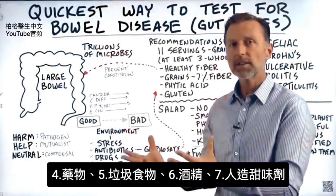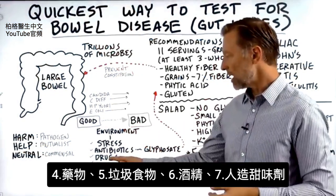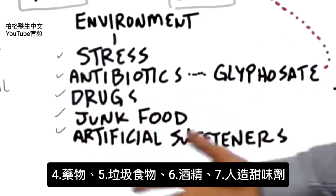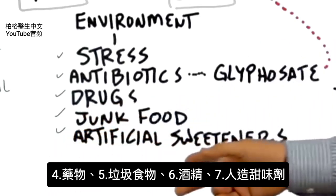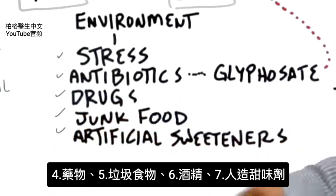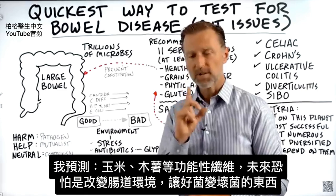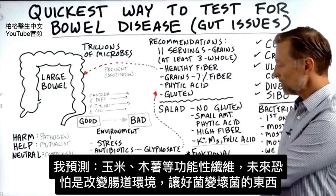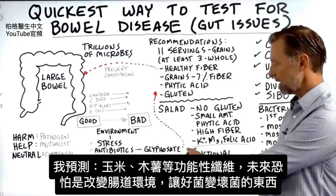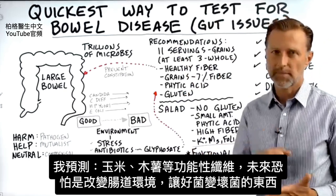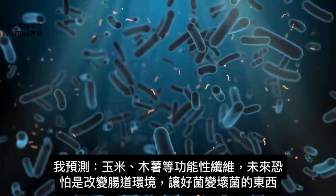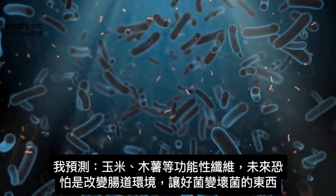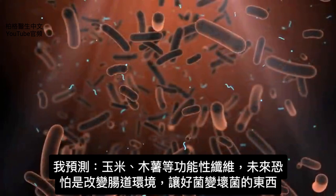There are other things that throw off the environment too: drugs, junk food, alcohol, and artificial sweeteners — those can also disrupt your gut. I think and predict that down the road we will see these functional fibers, like corn fibers and tapioca fibers, being shown to alter the environment for microbes, turning them from good to bad.